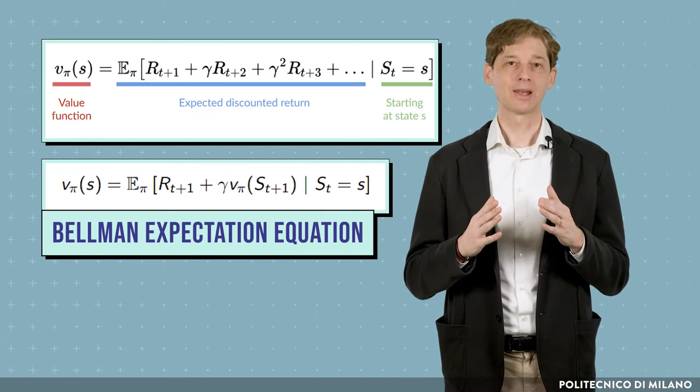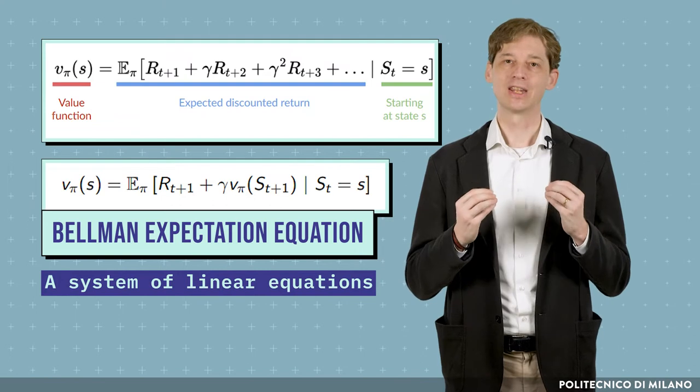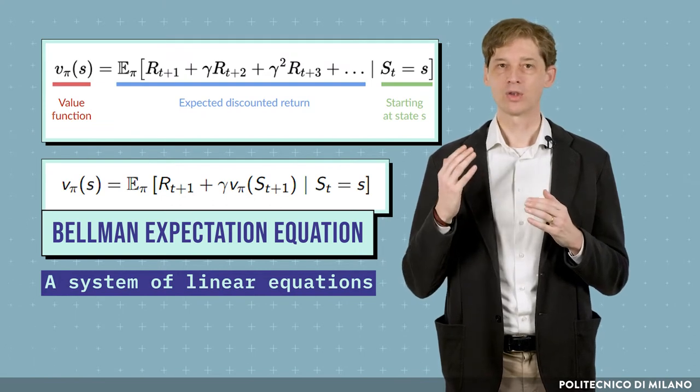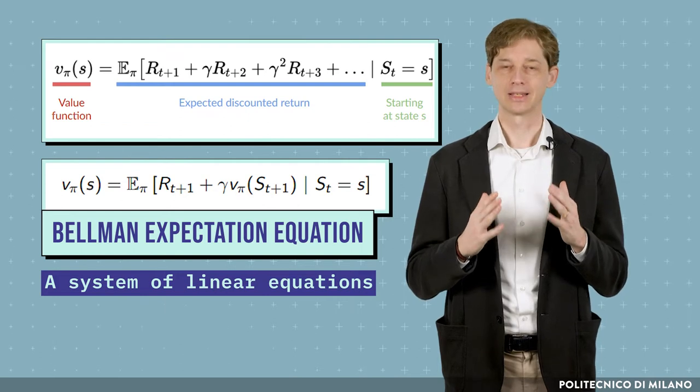Considering the Bellman Expectation Equations for all the states in the MDP, we get a system of linear equations, where the number of equations and the number of unknowns are both equal to the number of states.